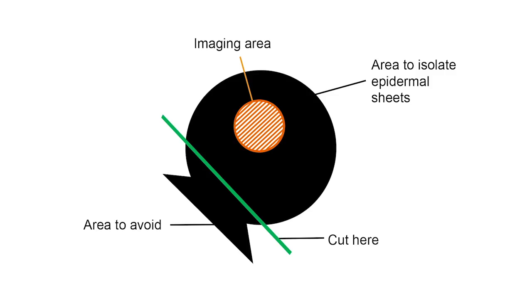Ideally, care should be taken during tissue collection to avoid the region where the ear joins the scalp. This area contains a lot of fatty tissue that can make the peeling more difficult. Only the area circled will be used for imaging after the epidermal sheets are stained.